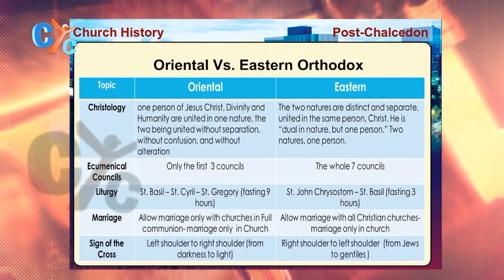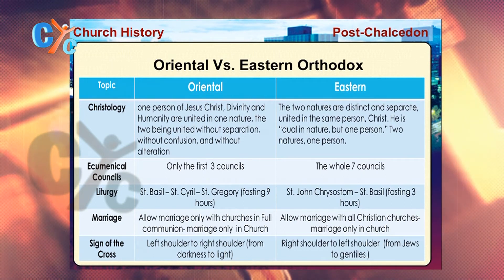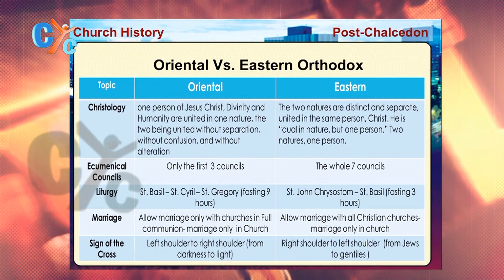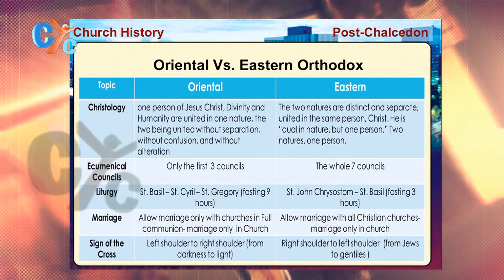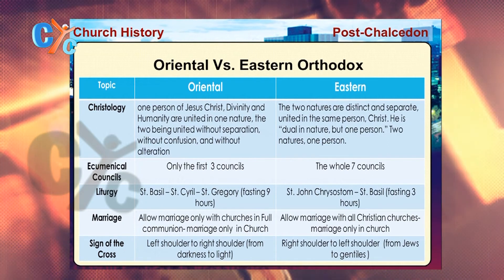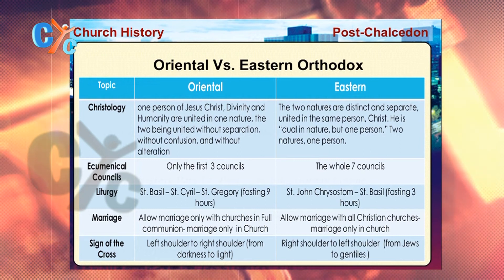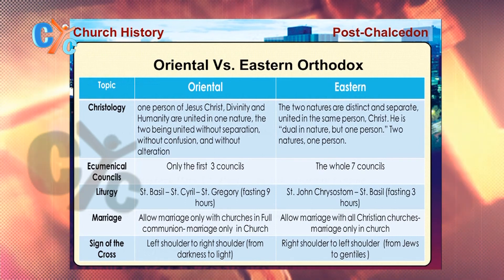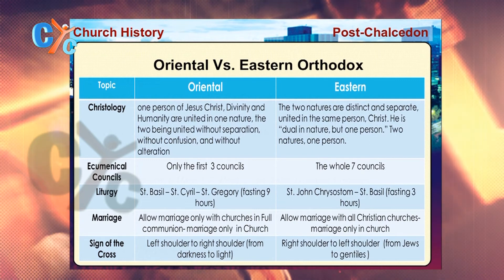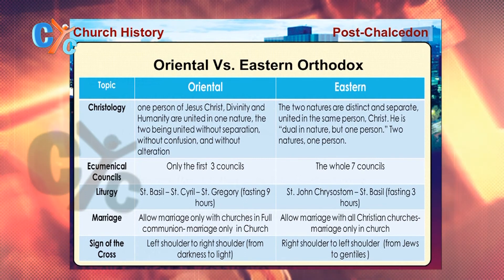In the following table we compare the major differences between the Oriental Orthodox — the non-Chalcedonian team including our church — and the Eastern Orthodox or Chalcedonian team. Regarding Christology, our church, the Oriental Orthodox, believes in one nature of the Lord Jesus Christ resulting from the unity of two natures — the divine and the human — without separation, without confusion, and without alteration. The Eastern Orthodox team believes in two natures of Christ united in one person, also without separation, confusion, or alteration.